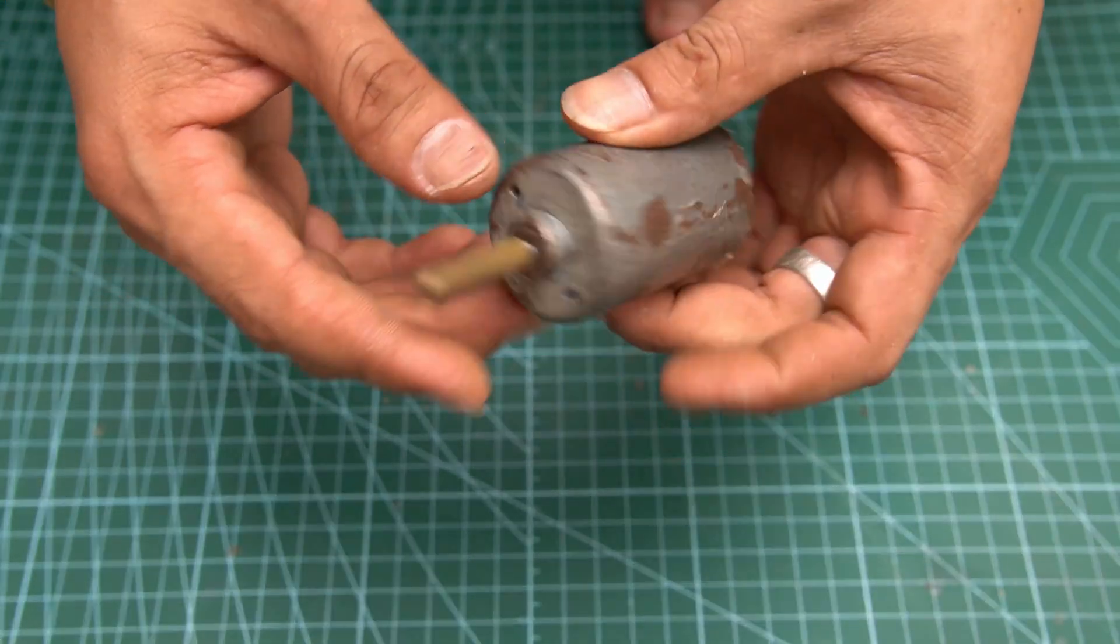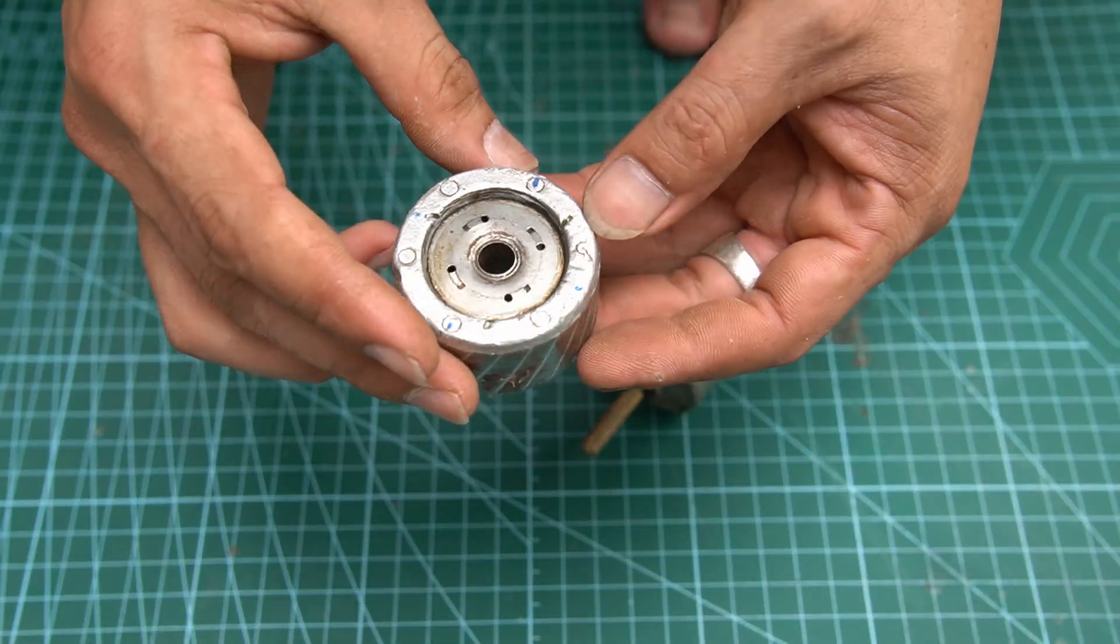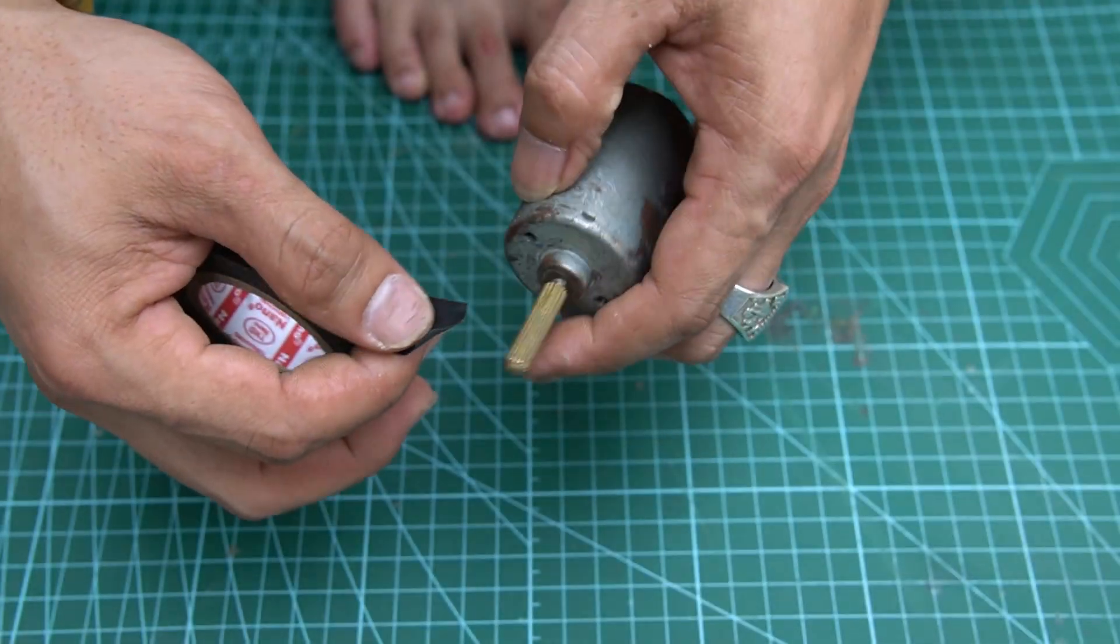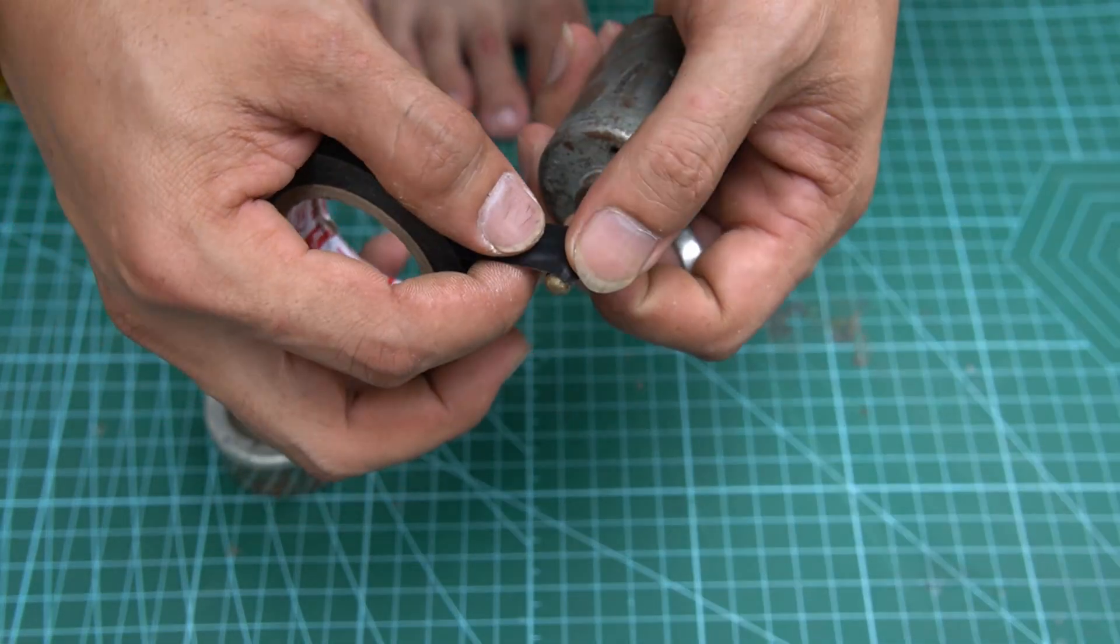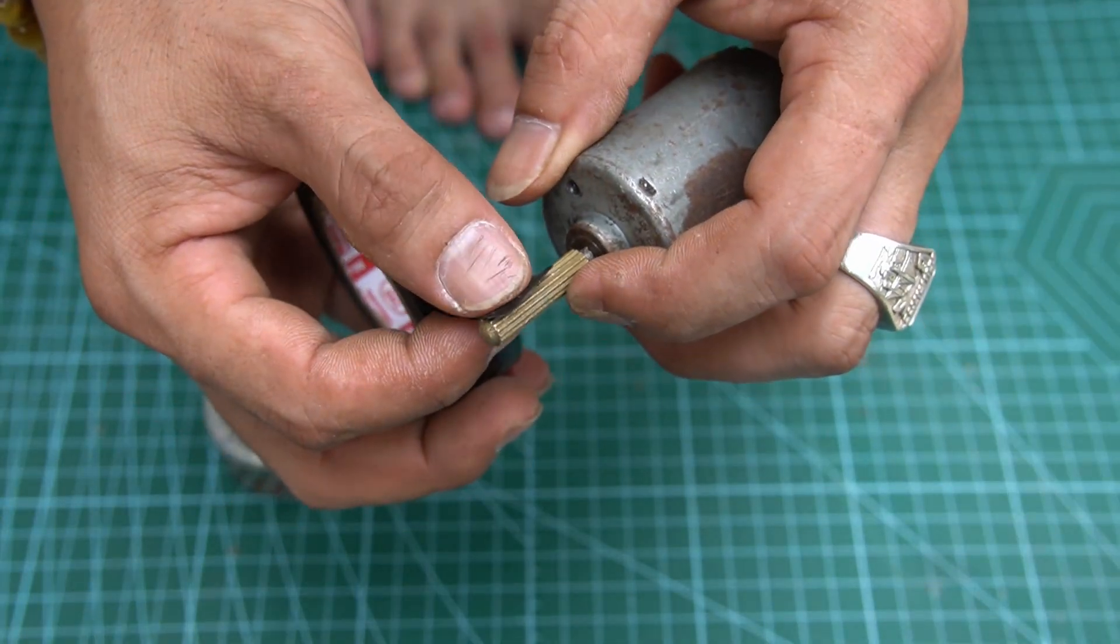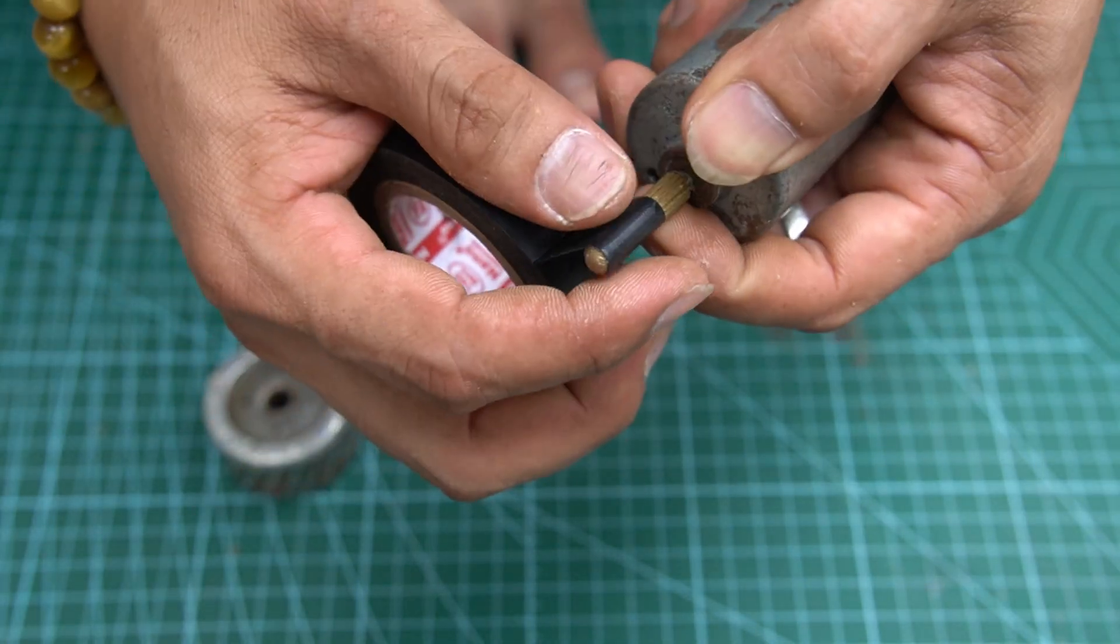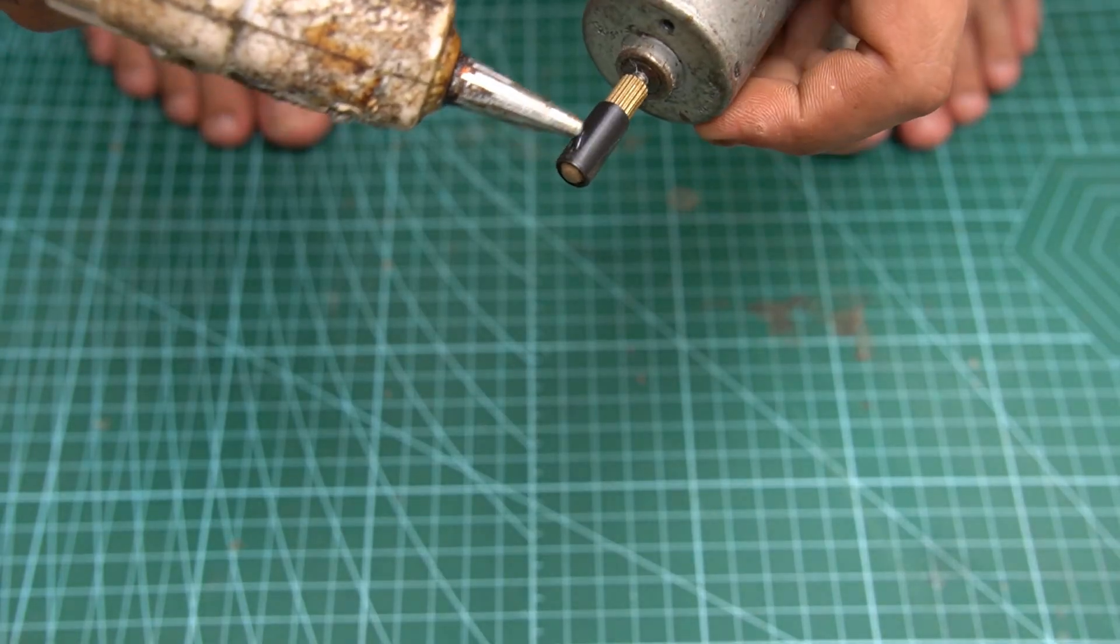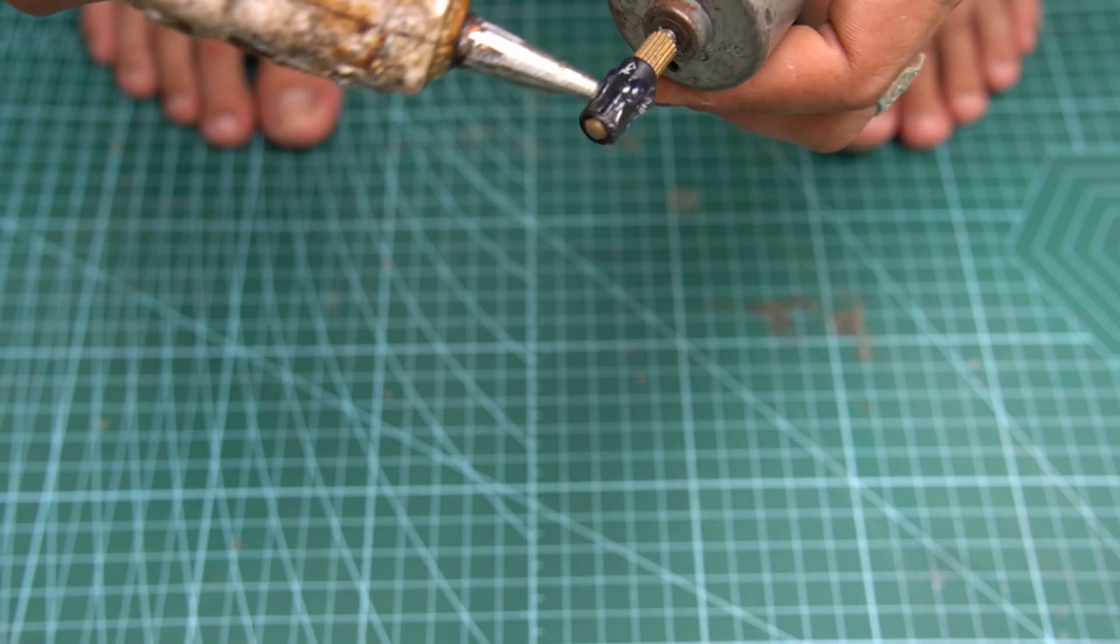I used an extra flywheel for this small motor. The motor shaft is smaller than the center hole of the flywheel, so I will use tape to wrap the motor shaft. I smeared some special glue on the motor shaft.